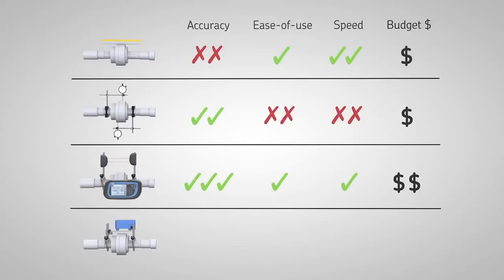The SKF TKSA 11 is designed to combine all of these benefits. It allows accurate shaft alignment and is very easy to use, fast and affordable for every budget.